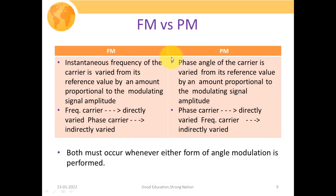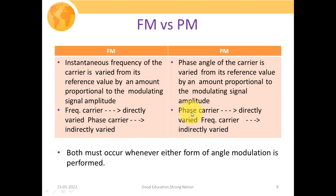In FM, the instantaneous frequency of the carrier is varied from its reference value by an amount proportional to the modulating signal amplitude. In PM, the phase angle of the carrier signal is varied with respect to the instantaneous amplitude of the message signal. In FM, varying the carrier frequency directly also varies the carrier phase indirectly. Conversely, in PM, varying the carrier phase directly also varies the carrier frequency indirectly.